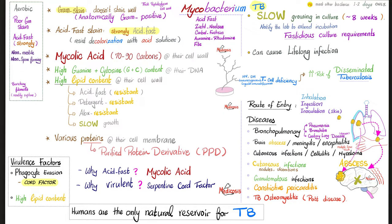Why are they acid-fast? Because of the mycolic acid — long-chain mycolic acid, mind you. They have high guanine and cytosine content in their DNA, and high lipid content in their cell wall. Thanks to this high lipid content, they are acid-fast and resist acid decolorization. They also resist most detergents, resist many antibiotics, and they grow slowly.